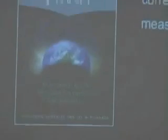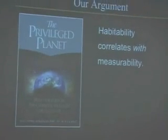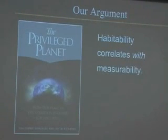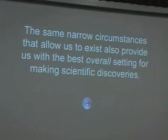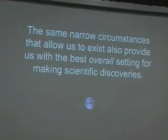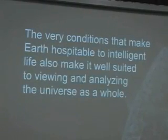So just saying that Earth-like planets are rare is not enough to infer design — we need a tiebreaker. That's what we present in our book 'The Privileged Planet: How Our Place in the Cosmos is Designed for Discovery,' which I co-authored with Jay Richards. The basic thesis can be boiled down to: habitability correlates with measurability. The same narrow circumstances that allow us to exist also provide us with the best overall setting for making scientific discoveries — the very conditions that make Earth hospitable to intelligent life also make it well suited to viewing and analyzing the universe as a whole.